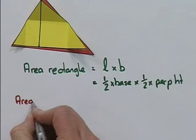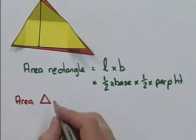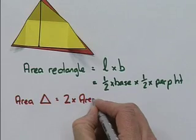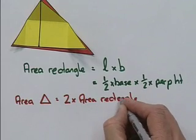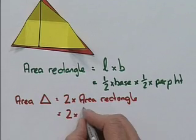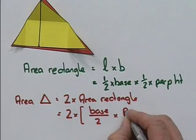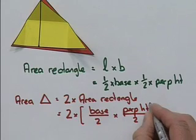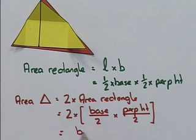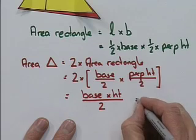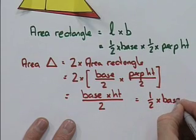And it remains for us to tidy that up. Now, remember, we are interested in the area of the triangle. And we have said that the area of the triangle is two times the area of the rectangle. In other words, it is two times base divided by two multiplied by perpendicular height divided by two. And all of that simplifies to base times height divided by two. Sometimes we say that that is one half times the base multiplied by the height. I'd like you now to take just a moment and decide whether the derivation of that formula makes sense to you.